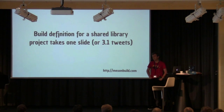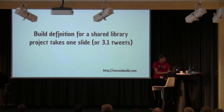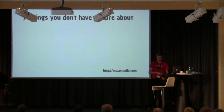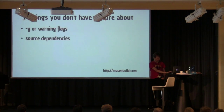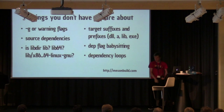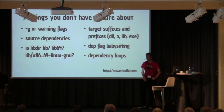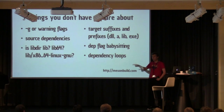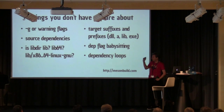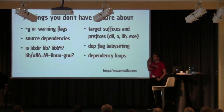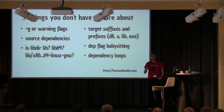This is the build definition in its entirety - it fits on one slide. You can send it to someone in three tweets, which is kind of nice. There are lots of things you don't have to care about. Taking a page from Rust: dependency loops are nasty when you write one by accident, but Meson's type system makes it impossible to write a dependency loop - so it's a problem that never ever comes up.